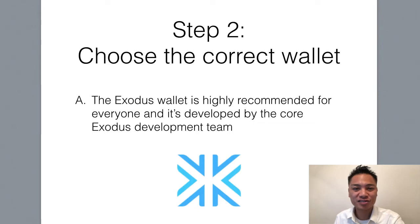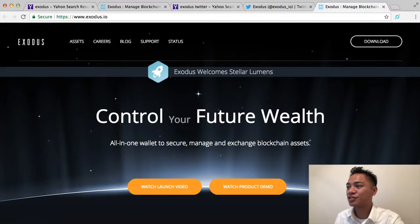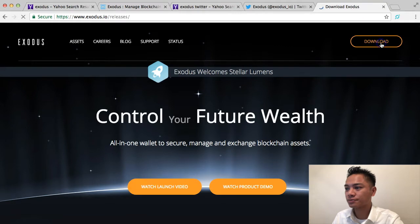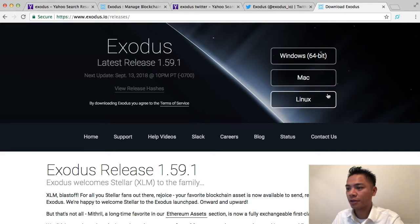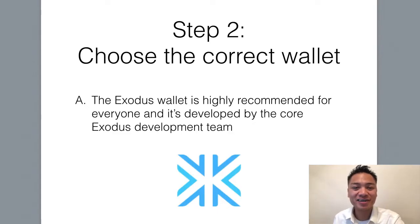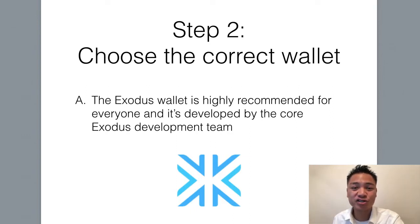Step number two is to choose the correct wallet. On the website, click the top right where it says Download. It will show you the options: Windows, Mac, and Linux. The Exodus wallet is highly recommended for everyone, primarily because it's super user-friendly and it's a multi-asset wallet — it stores many digital currencies, not just one. And it's being developed by the core Exodus development team.